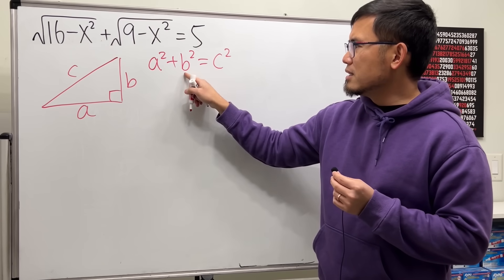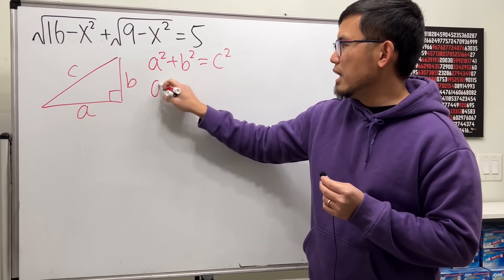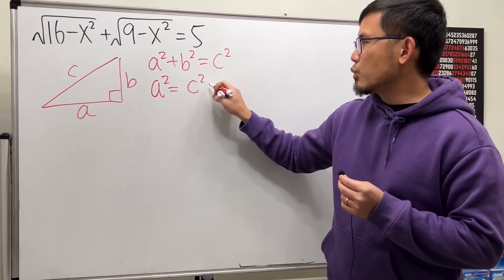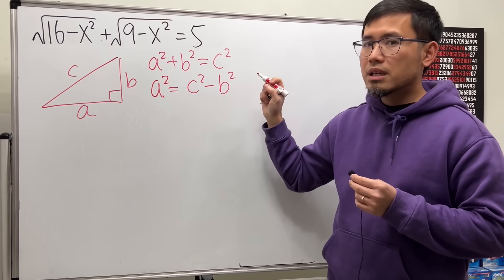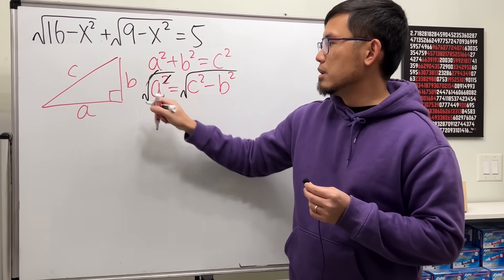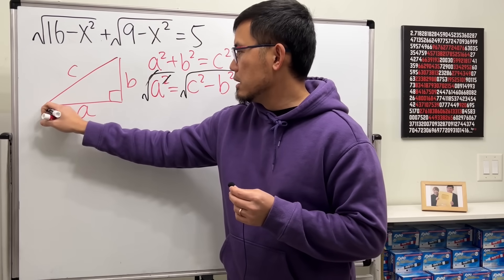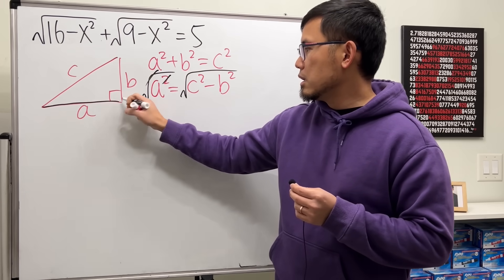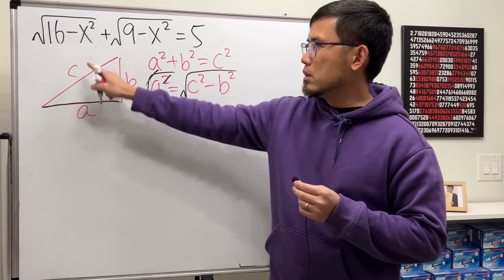So let me minus the b squared on both sides, so we get a squared equals c squared minus b squared, and then take the positive square root. So we can see that a has the form like that.